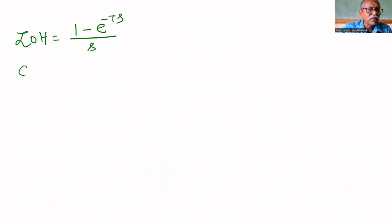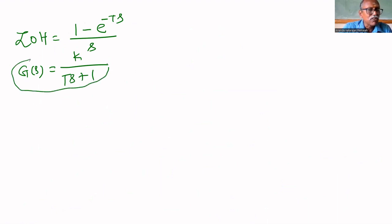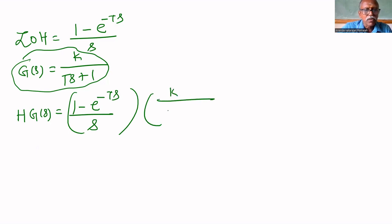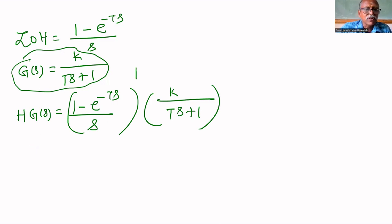Suppose you want to find the pulse transfer function. G of S is given: 1 over K upon tau S plus 1. In the examination, they may ask you to find the pulse transfer function of this G(S). If they ask, you have to find H·G(S), which equals 1 minus e power minus Ts upon S, multiplied by K upon tau S plus 1. Multiply, then find the Z transform. That is called the pulse transfer function.